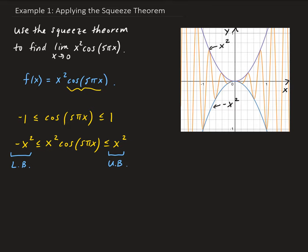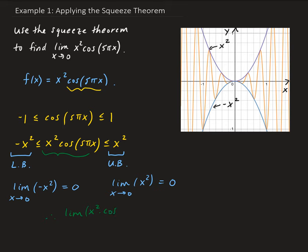Now we can go ahead and apply the squeeze theorem. We're going to take the limit of minus x squared as x approaches 0 — this gives us 0. And we take the limit of x squared as x approaches 0 — this also gives us 0. So therefore, the limit of x squared times cosine of 5 pi x as x approaches 0 is also 0.